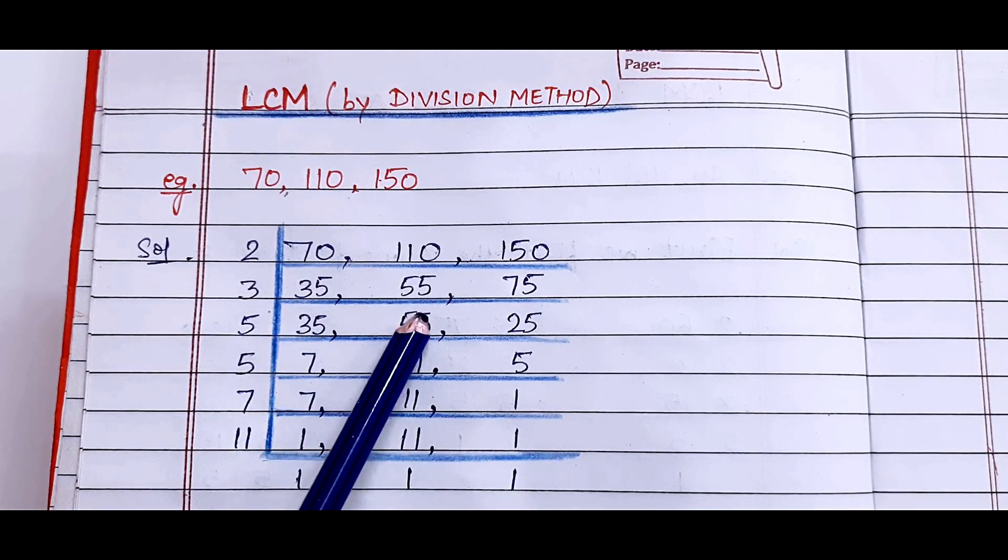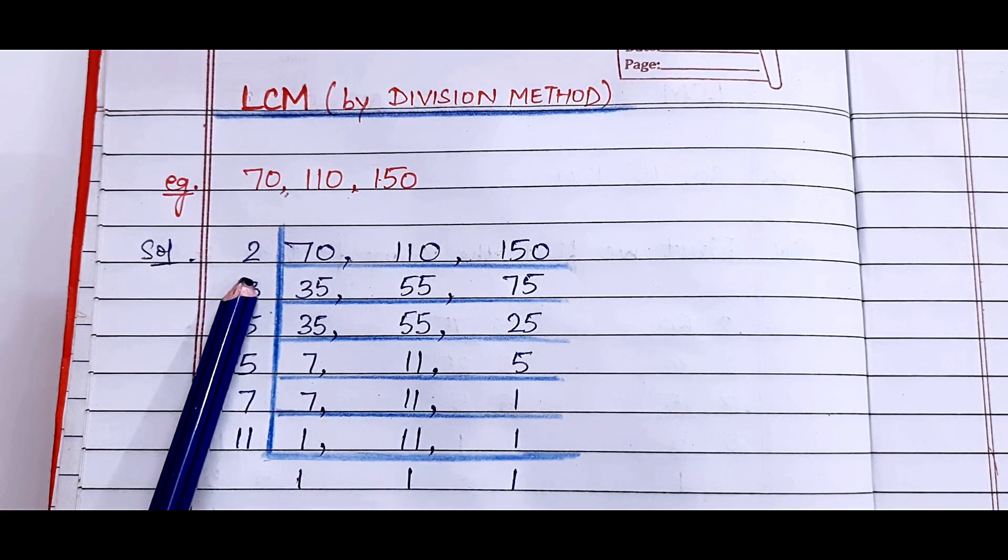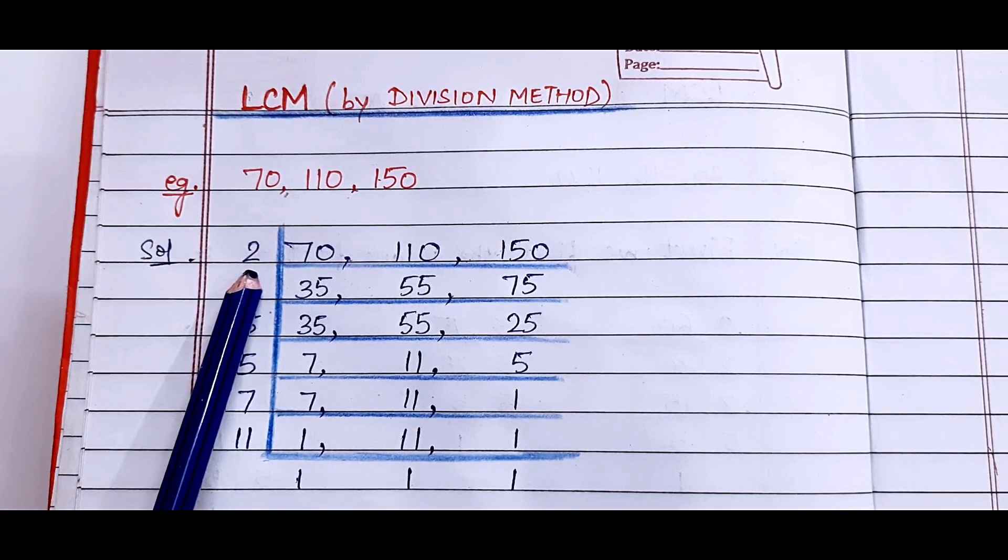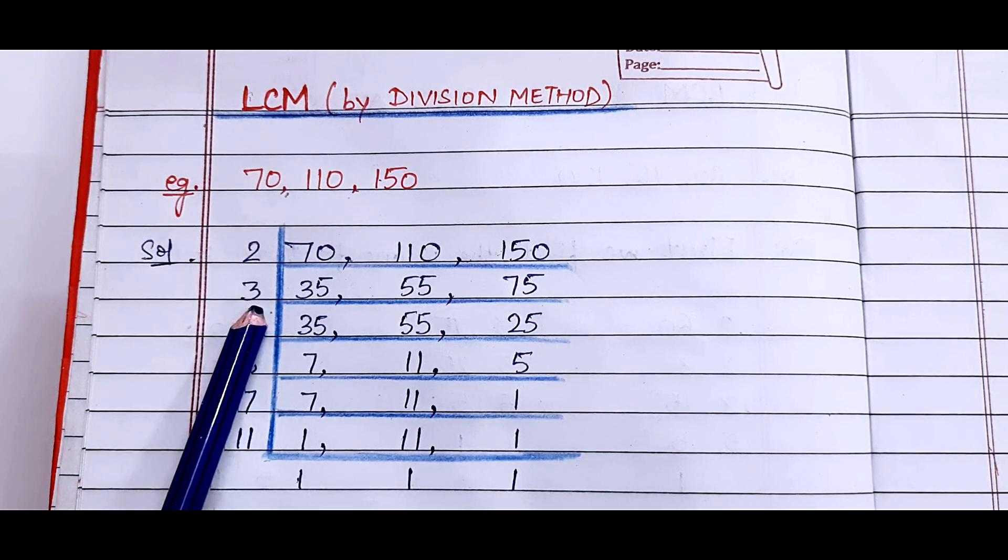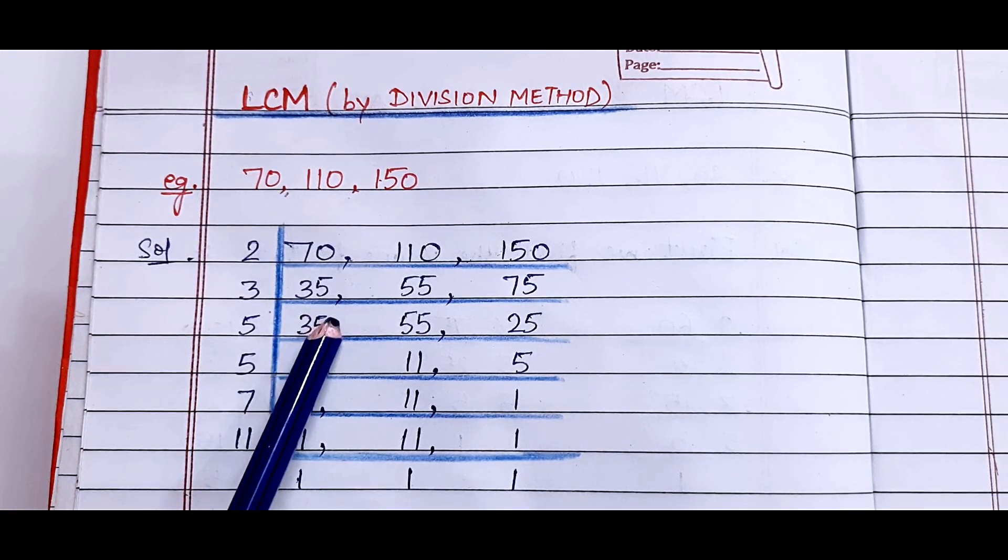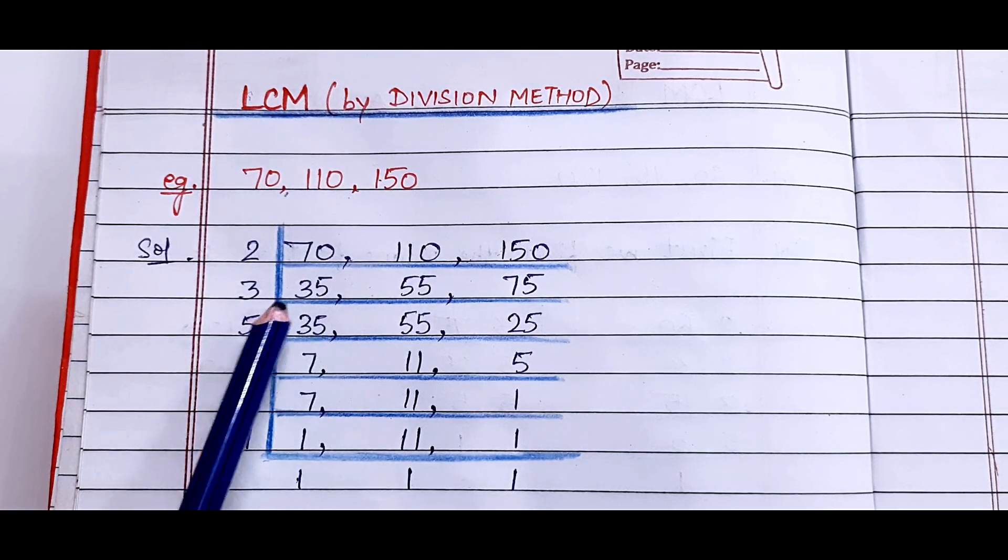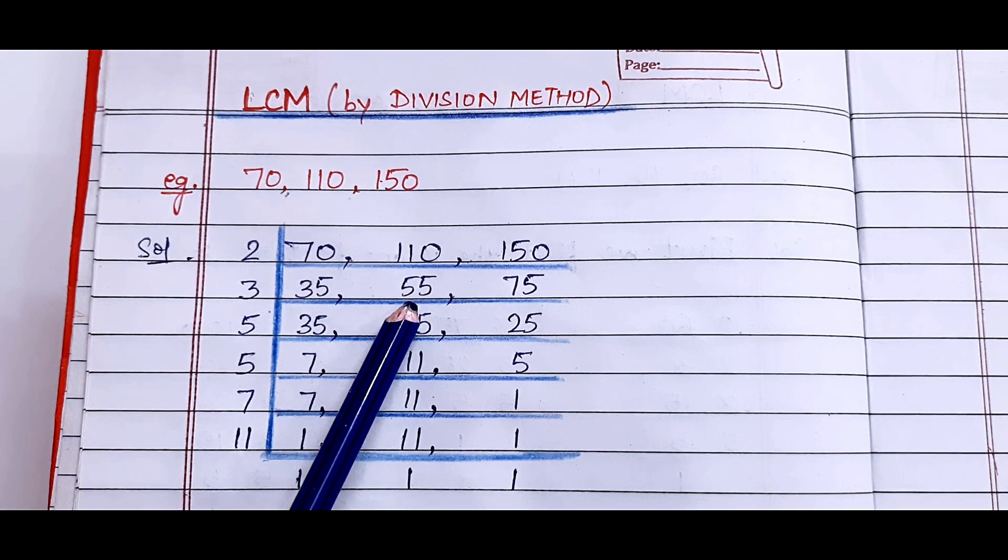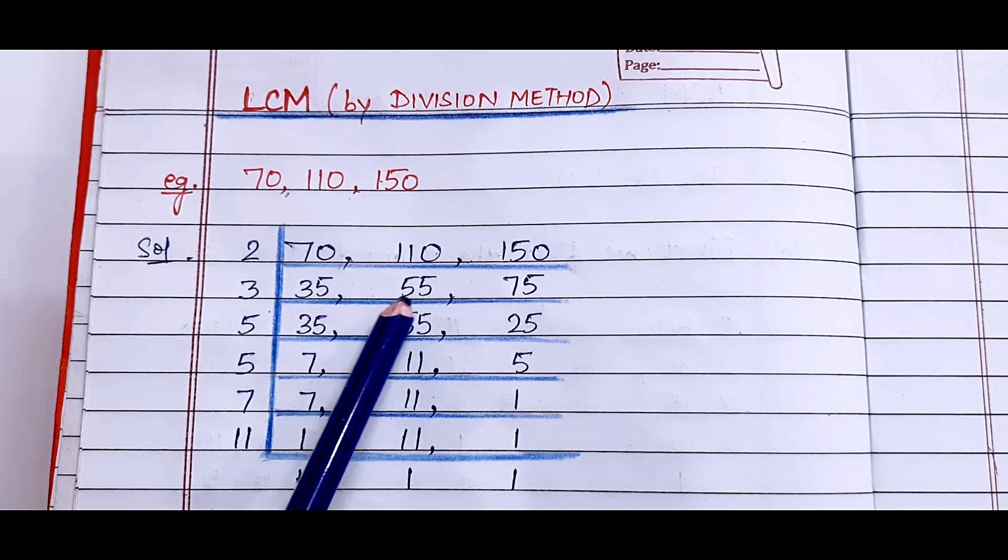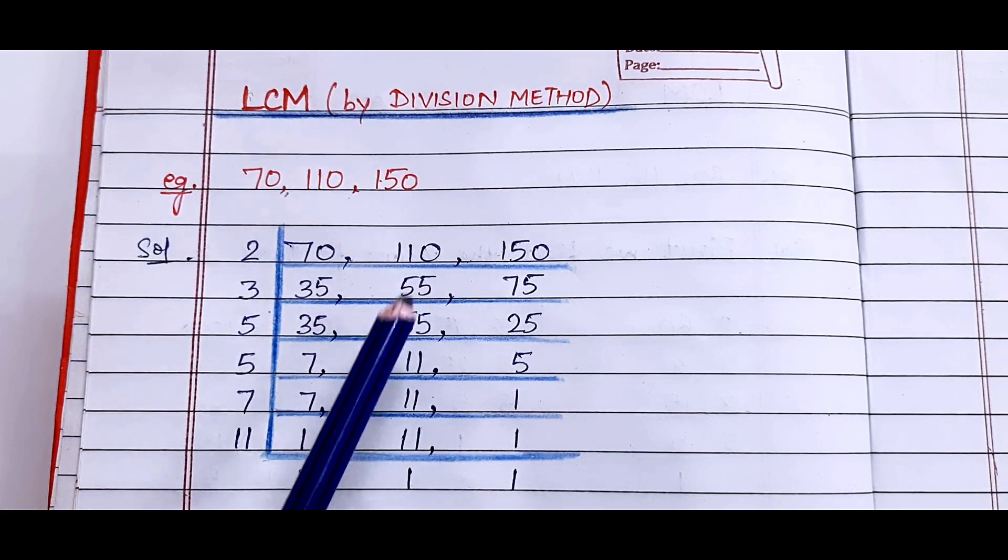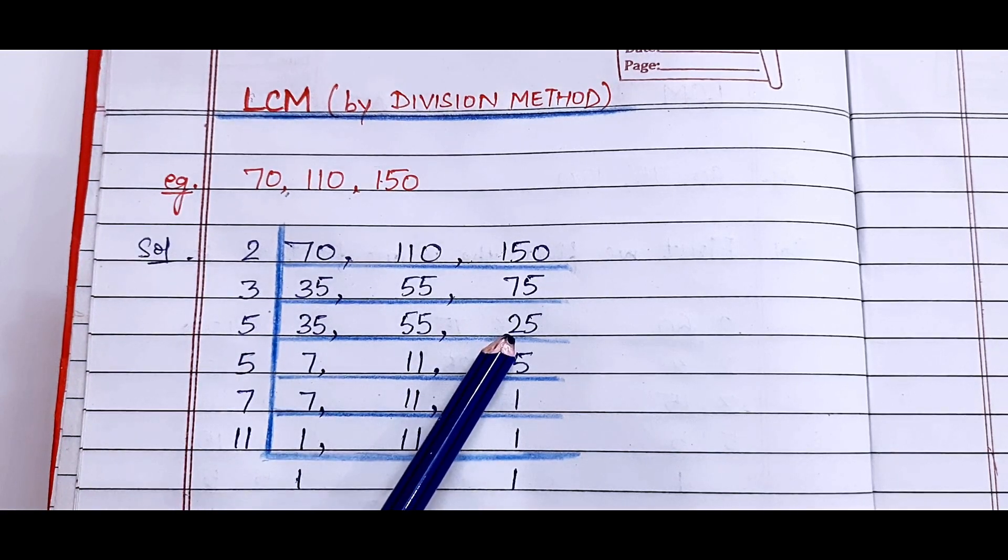Now see the numbers 35, 55, 75. None of these numbers is divisible by 2, so we will see the next prime number, that is 3. By 3, this number is not divisible, so I have written 35 as it is. We will not change it. The next number is 55. Again, 55 is not divisible by 3, so we will write 55 as it is. But 75 is divisible by 3. How many times? 25 times.